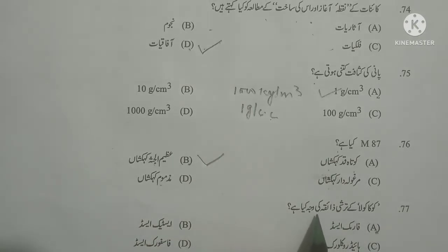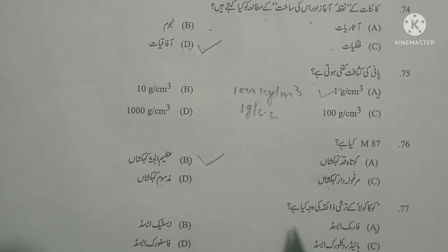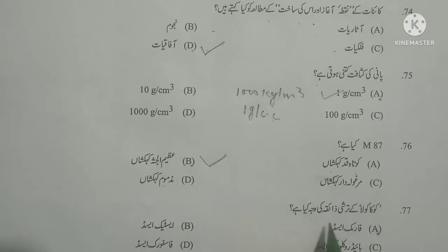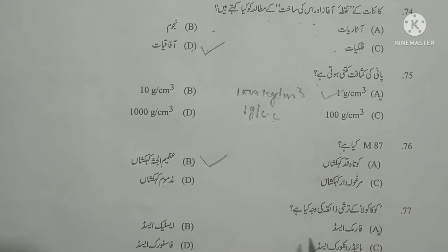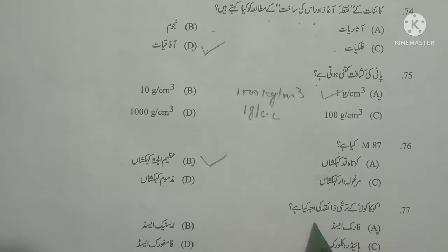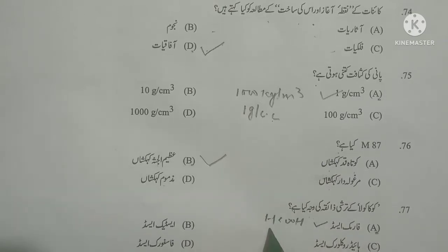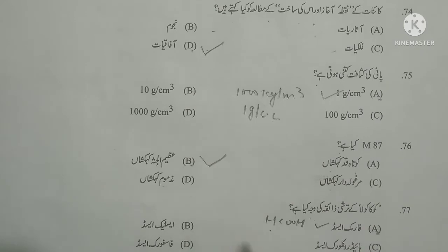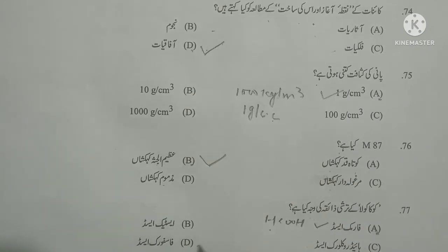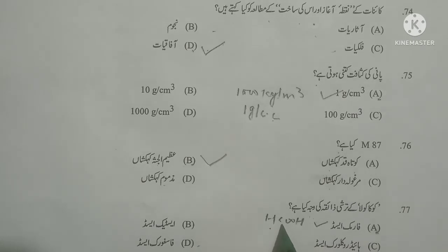Next question: Koca kola ke tarsi zaiqa ki wajah kya hai? What causes the sour taste of Coca-Cola? As you know, the sour taste of Coca-Cola comes from phosphoric acid. Its formula is H₃PO₄. Options given: formic acid, acetic acid, hydrochloric acid, phosphoric acid — option D, phosphoric acid, is correct.